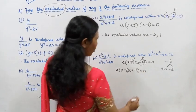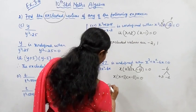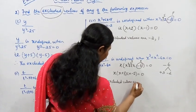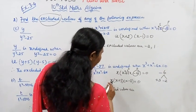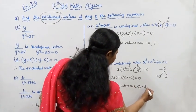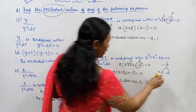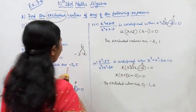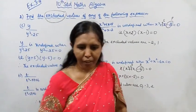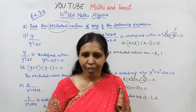Therefore the excluded values are x = 0, x = −3, and x = 2. The excluded values come from setting the denominator equal to zero. Practice well. This channel will help you get 100 marks. Subscribe to the channel and click on the bell button.